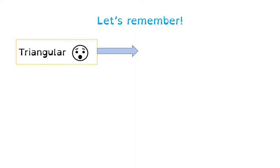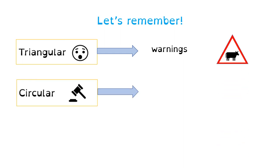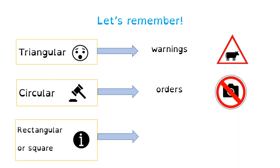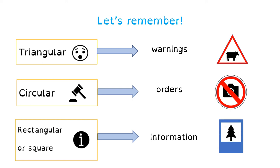Let's remember all of them. We have triangular signs — they give us warnings. Circular signs give us orders. And rectangular or squared signs give us information. Bye bye boys and girls!